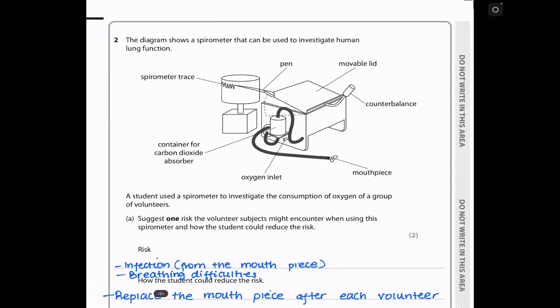Let's continue to question 2. In question 2, the diagram shows a spirometer that can be used to investigate human lung function. This is the spirometer. We can see the spirometer trace on the drum. We can see the container for the carbon dioxide absorber. There is an oxygen inlet, which is that. Then the mouthpiece, where the people or the participants are going to place their mouth as they breathe in and out. Then we have a counterbalance. We have a movable lid and a pen.